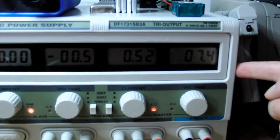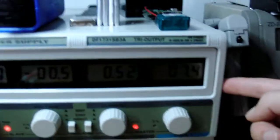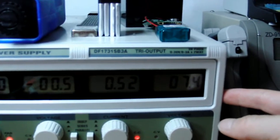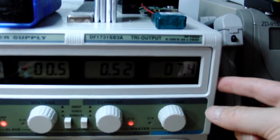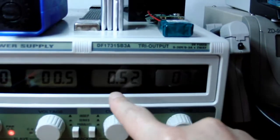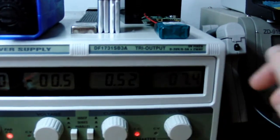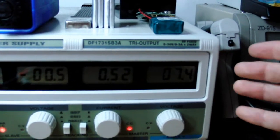And as the charge state approaches full and the cell voltage approaches 8.4V the current will automatically go down so you can't overcharge your battery.